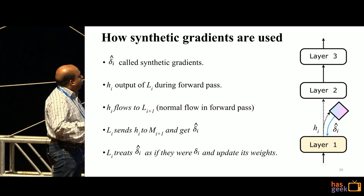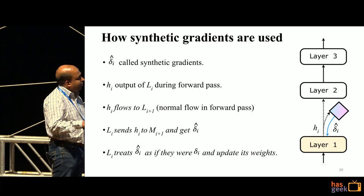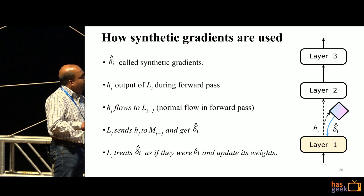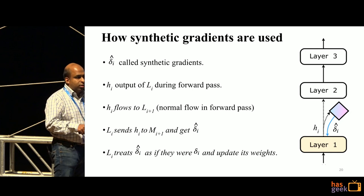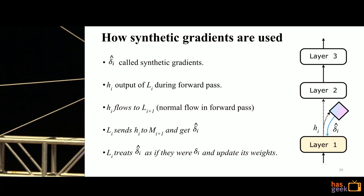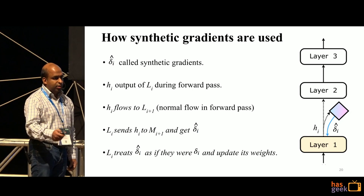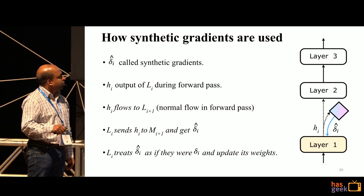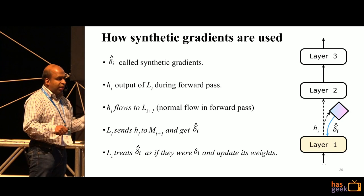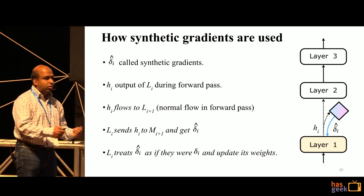Here's what happens: a layer does a forward computation and produces output h_i. This h_i is sent to the next layer and simultaneously sent to the oracle. The oracle returns the estimate of the gradient. The moment the layer has this value — which is instant — it treats it as the actual gradient and updates its weights immediately, without waiting for anything.